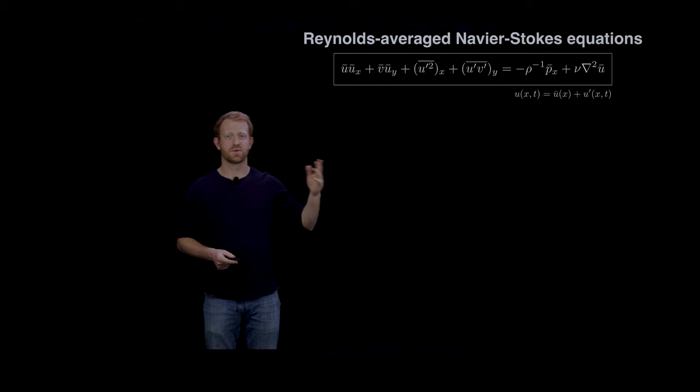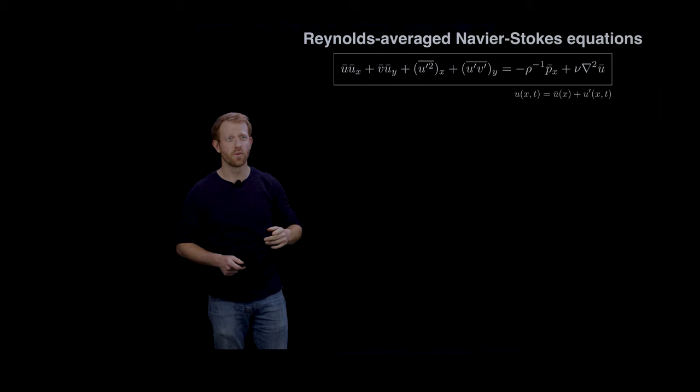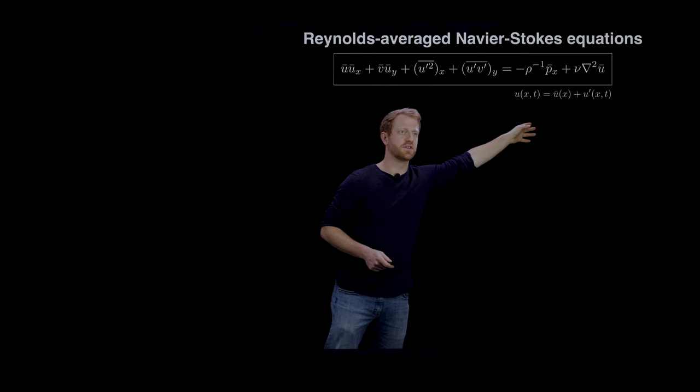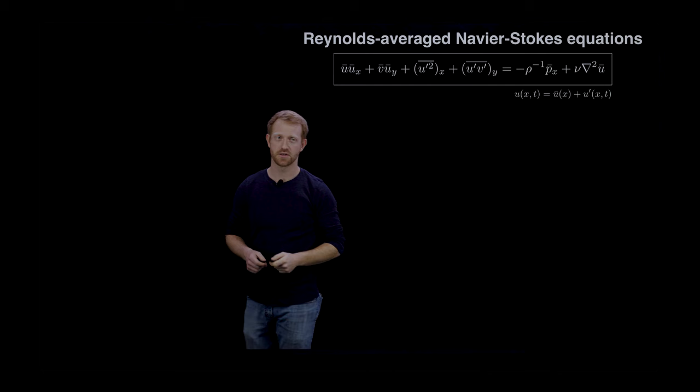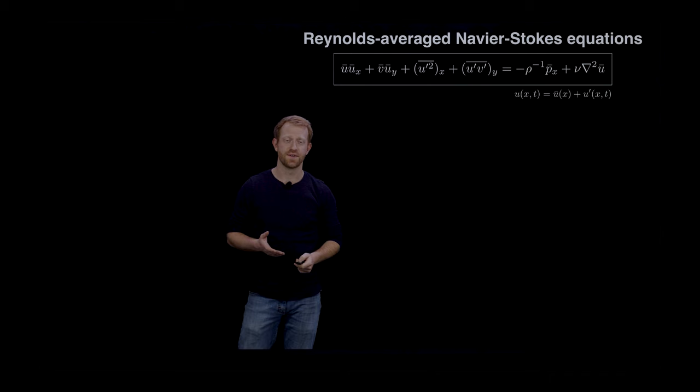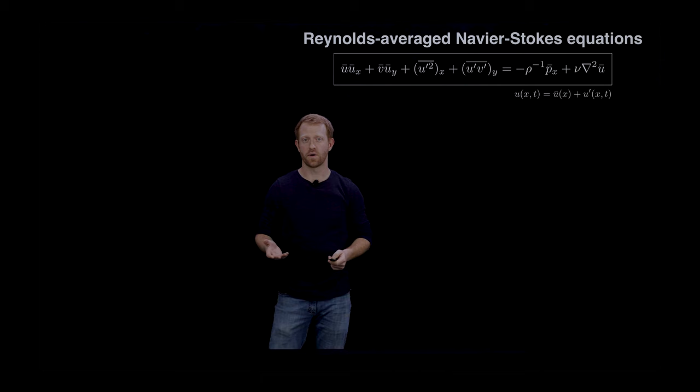If we take the instantaneous flow field and decompose it into mean and fluctuating terms, we get what's called the Reynolds-averaged Navier-Stokes equations. What I'm showing here is the momentum equation for the downstream X component. We have six terms including mean flow advection, pressure gradient, viscosity, and these Reynolds stresses which are related to turbulent momentum transport.